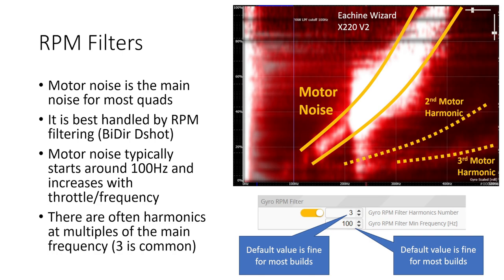Now the main noise in any quadcopter is the motor noise. Those spinning motors and props create a lot of vibration. Now this motor noise is best handled by RPM filtering using bi-directional D-shot. Now for this filter guide you do need to have bi-directional D-shot and RPM filtering enabled. If you're not sure how to do that check out the first video in this series when I go through it. Typically motor noise will start around 100 hertz and increase in magnitude with throttle position and frequency. The faster the motors spin the more powerful the vibrations they create. In addition there are often harmonics of the motor noise at multiples of the main frequency and seeing two or three harmonics is common.